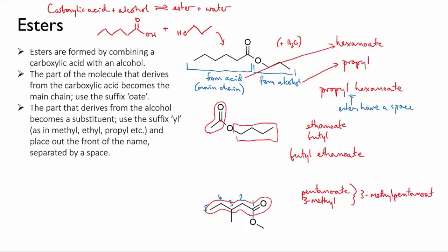But then we need to indicate the ester substituent here. That has only one carbon, so it's going to be called a methyl as well. Because it's the special ester substituent and not stuck to the main chain, it gets put out the front of the name as a separate word. So that gives us methyl 3-methylpentanoate.